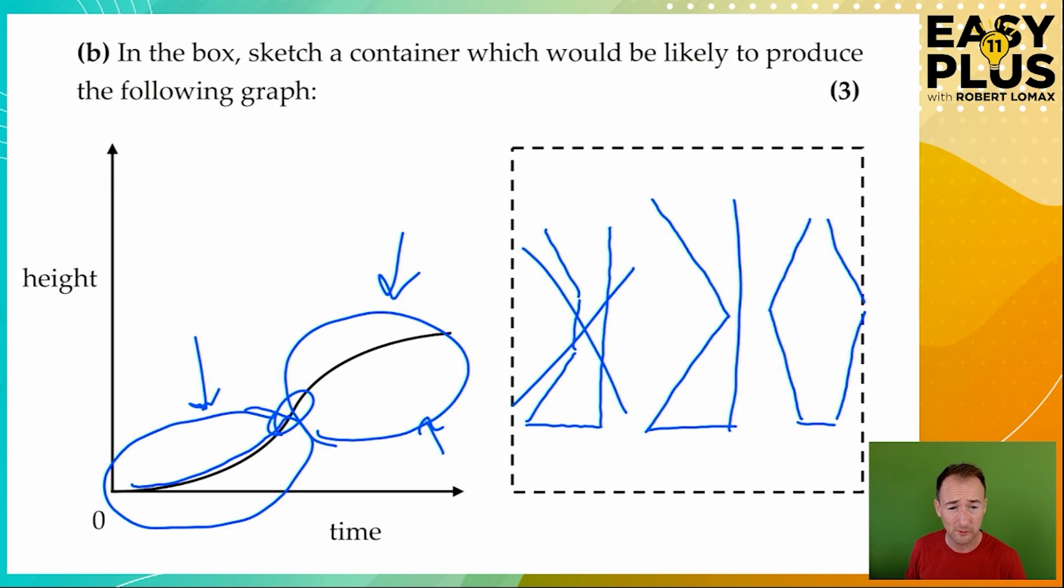And last of all, perhaps obviously, if you add any fancy stuff at the top of the container, that would change the graph. So for example, something like this would produce a different result because filling this bit would also need to be reflected in the graph. So we're left with just the middle option as an acceptable answer. Short and simple, but I hope that's useful because it does come up from time to time and it isn't a particularly obvious question type and does take some thought.